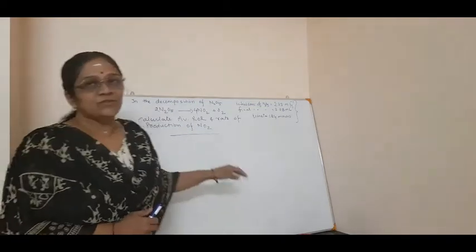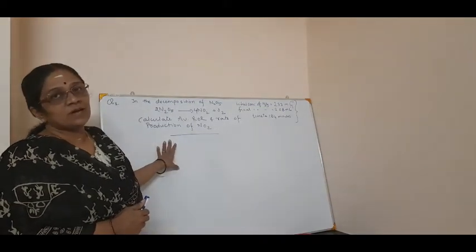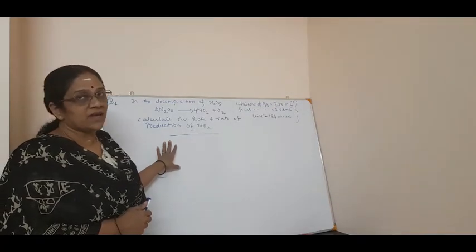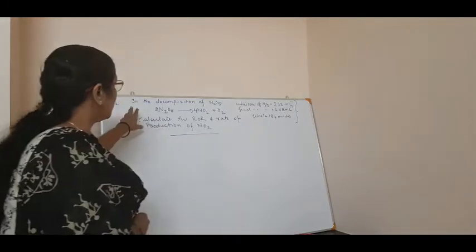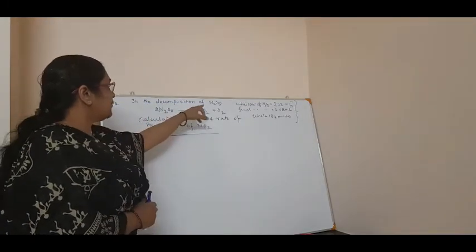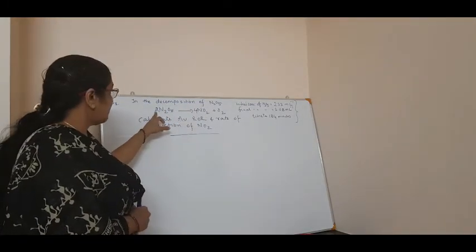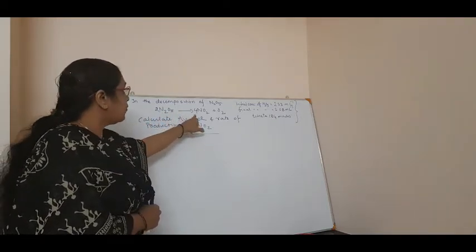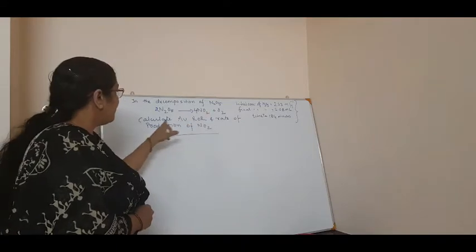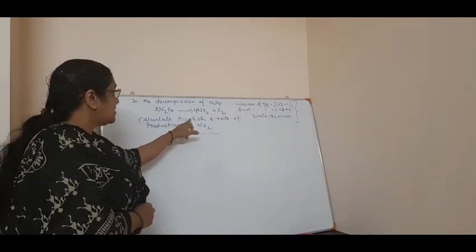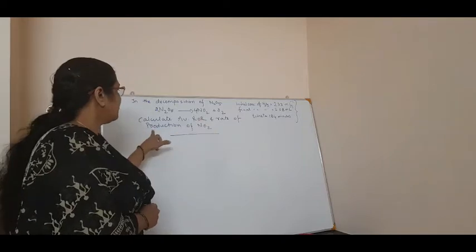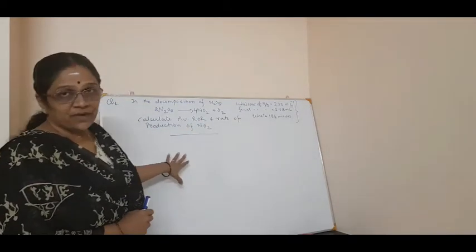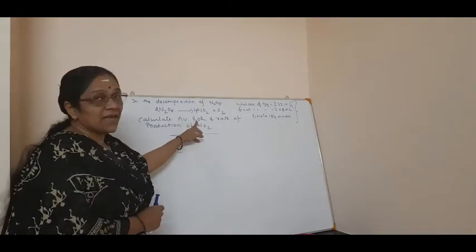Hello students, today you will see a small problem related to how to calculate the average rate of reaction. The problem is: in the decomposition of N₂O₅, you have been given a balanced equation, that is 2N₂O₅ gives 4NO₂ plus O₂. Calculate the average rate of reaction and rate of production of NO₂. So, what we have to find out is the average rate of reaction.